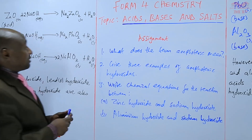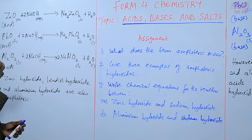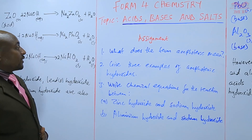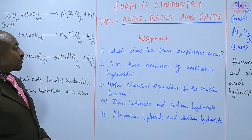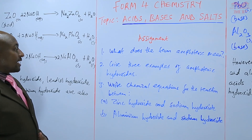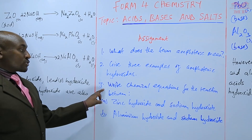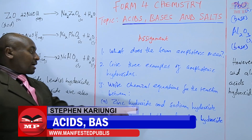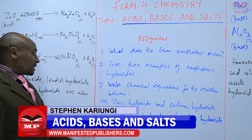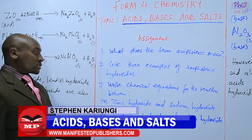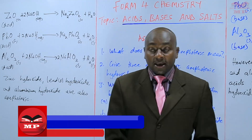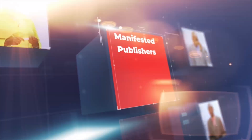For your assignment: first, what does the term amphoteric mean? Second, give three examples of amphoteric hydroxides. Third, write chemical equations for: (a) zinc hydroxide and sodium hydroxide, and (b) aluminium hydroxide and sodium hydroxide. We'll stop there until next time. Goodbye.